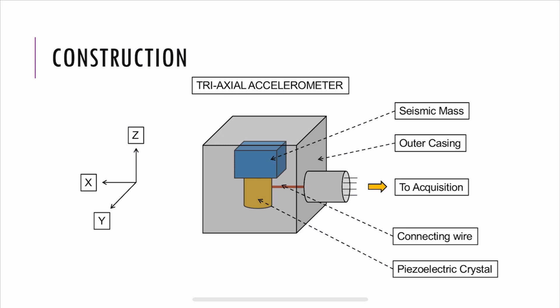This is a construction of a typical triaxial accelerometer. You have here the seismic mass, the piezoelectric crystal, it can be man-made or naturally occurring. The price will depend on that. And then you have the connecting wires, which is going out to the data acquisition. You have this outer casing.